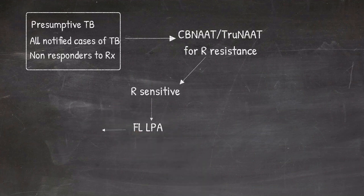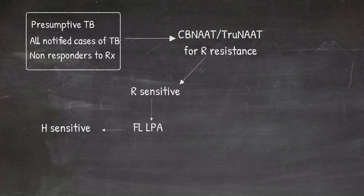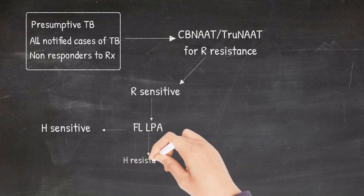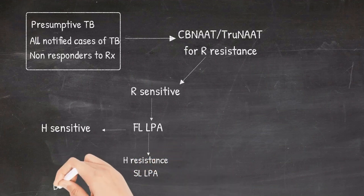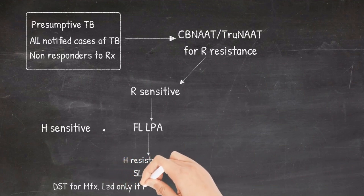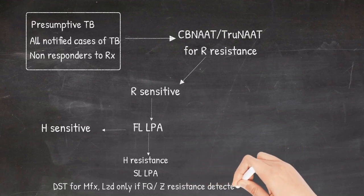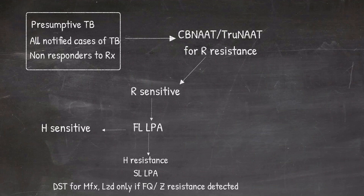Once rifampicin resistance is ruled out, the line probe assay is done to rule out INH resistance. If it is sensitive to isoniazid, the patient is then treated as drug sensitive tuberculosis. That is when the resistance to both rifampicin as well as isoniazid is ruled out, the patient is managed as drug sensitive tuberculosis. If INH resistance is detected, line probe assay for second line drugs like fluoroquinolones and second line injectables are done. Line probe assay for pyrazinamide can be done if available. Once all other resistance are ruled out except for INH, the patient is managed as H-monoresistant tuberculosis.